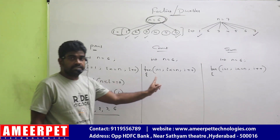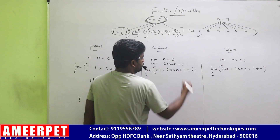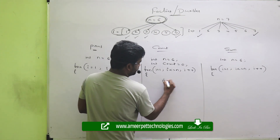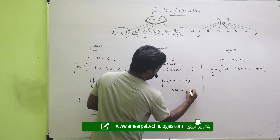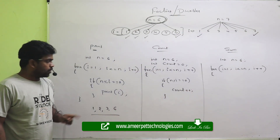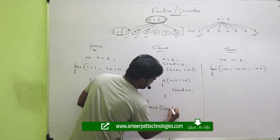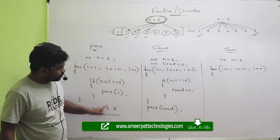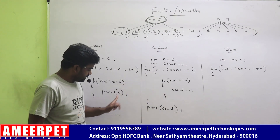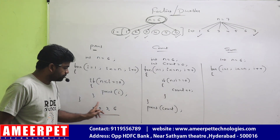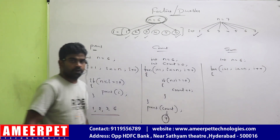Now, here we are counting all the factors. So take one variable: int count equal to 0. The same condition: if N mod I equal to 0, just increase the count value — count plus plus. Outside the loop, print that count. For 6, factors are 1, 2, 3, and 6 — so count increases 4 times, and the output is 4.